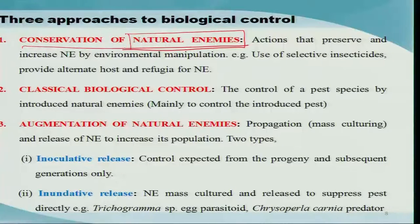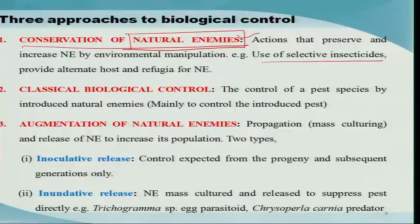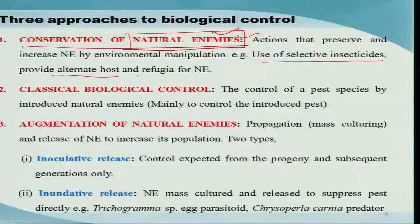In such conditions, we have to create a situation wherein the natural enemies of that local pest should be conserved so that the pest population can be kept below the economic level. How do we do that? For example, by use of certain selective insecticides or management practices which do not harm or eliminate these natural enemies, so that the natural enemies will thrive and start controlling the pest. Or you provide certain alternative hosts or refugia for the natural enemies so that they can escape and then come back and control the pest population.